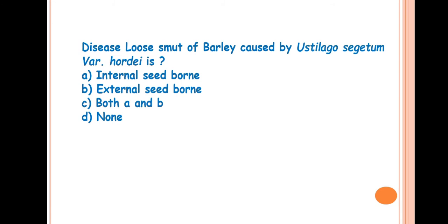Next question is, disease loose smut of barley caused by Ustilago segetum variety hordei is? Answer is internally seed-borne disease. The loose smut of barley and the loose smut of wheat, these two are internally seed-borne diseases. Means the hibernating structure of fungus resides inside the seed, that is in the endosperm.